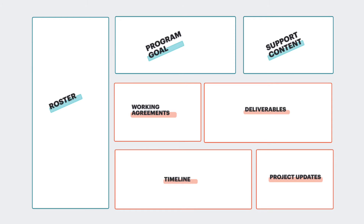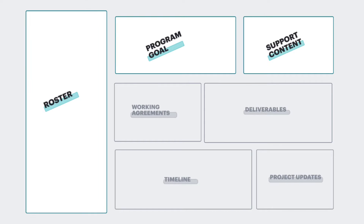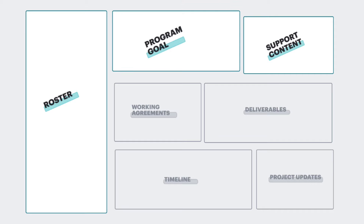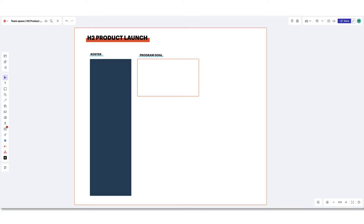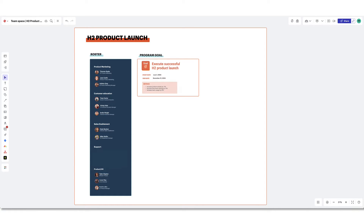Content that provides focus and direction is going to be your reference resources. This information is rarely going to change through the span of a project. Material that falls under this category is going to be your roster, project goals, and support content for the project. Your roster and project goals are typically going to be added directly to the board and should be filled out before your first meeting with the team.